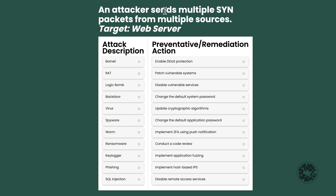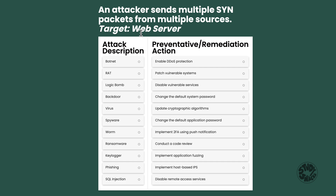So when you have an attacker that's sending multiple SYN packets from multiple sources, what type of attack is that? Well, that's a SYN flood. The goal of a SYN flood, especially when it's targeting a web server, is to knock the server offline — so that is a type of denial of service attack. More specifically, if it's coming from multiple sources, that tells you it's a distributed denial of service attack, because you need multiple computers to carry out a SYN flood. When the server responds with its SYN-ACK, that traffic has to be distributed across multiple sources.